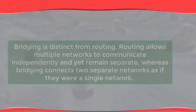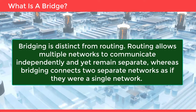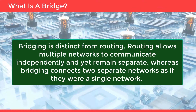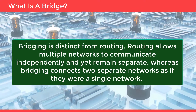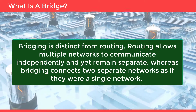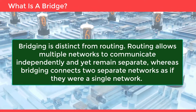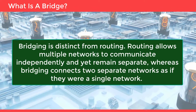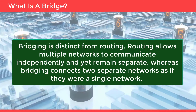Bridging is distinct from routing. Routing allows multiple networks to communicate independently and yet remain separate, whereas bridging connects two separate networks as if they were a single network.